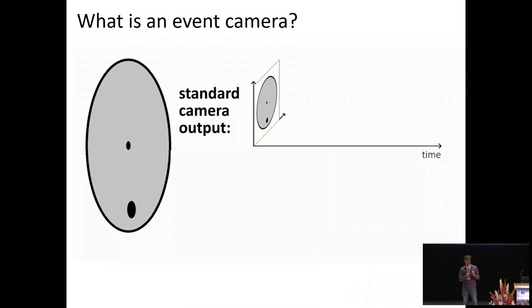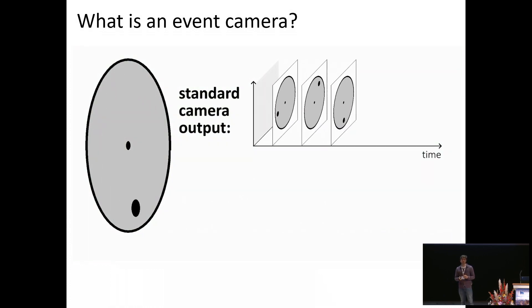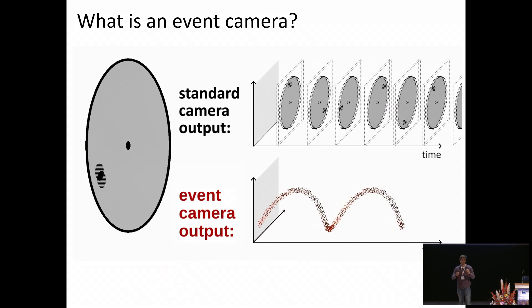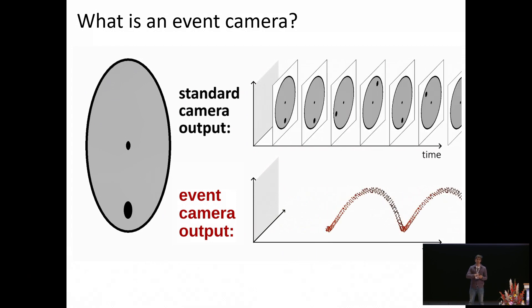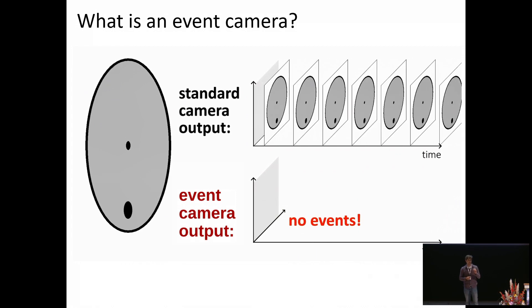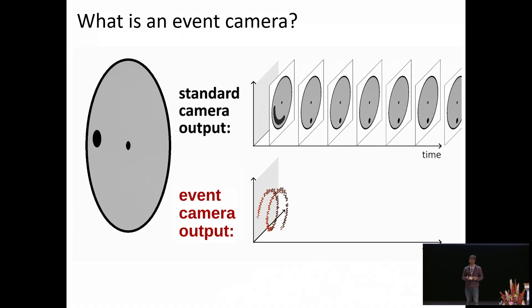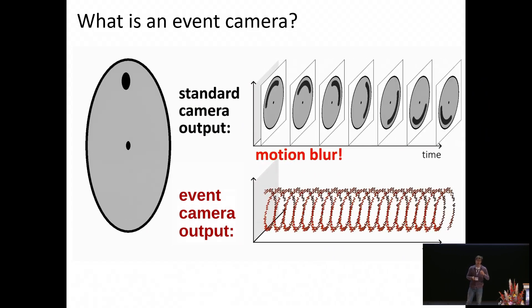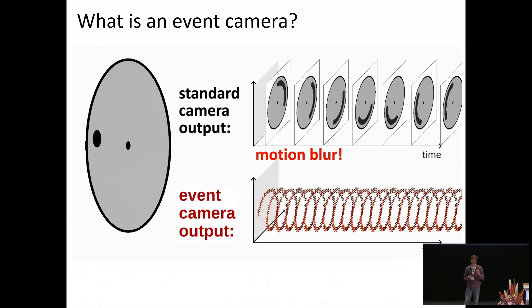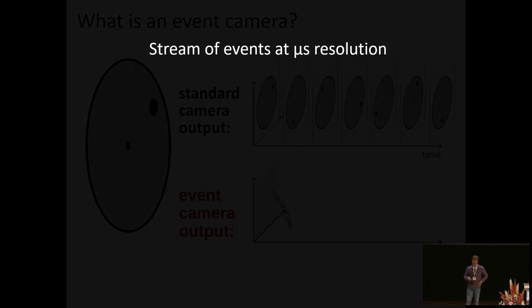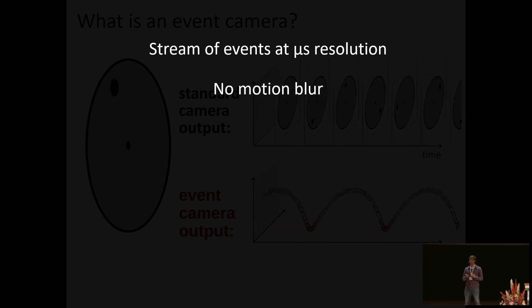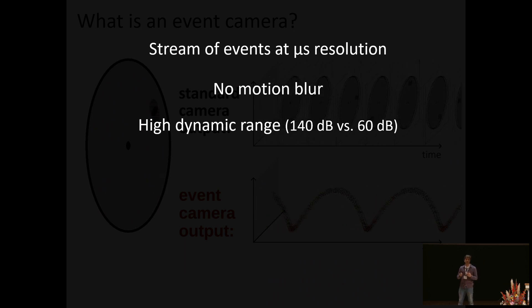Let me explain how an event camera works by contrasting it with a standard frame-based camera looking at a rotating disk with a dot. While standard cameras output individual frames at fixed rates, an event camera has individual smart pixels which respond asynchronously to changes in intensity at the time they occur, producing a kind of spiral in space-time. When there's no motion, no events are triggered. When motion speeds up, standard frames become motion-blurred, whereas event cameras, due to their high temporal resolution, still capture this information accurately. Event cameras offer a stream of events at microsecond resolution without motion blur, and have a phenomenally high dynamic range, making it possible to see at night in moonlight and even when pointing the sensor against the sun.